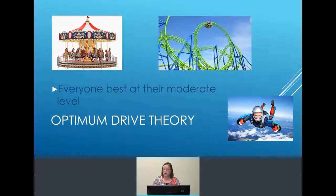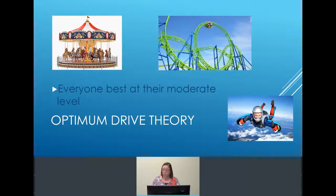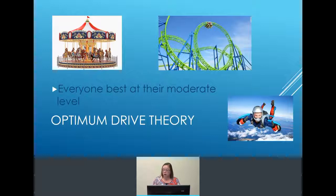The last theory that explains in general why people do what they do is optimum drive theory, which says that people will seek out their own preferred level of arousal. This explains why some people can only handle the merry-go-round, while others will stand in line to ride the best roller coasters on the planet. You can also see the gentleman jumping out of an airplane — again, that is seeking a preferred level of arousal.